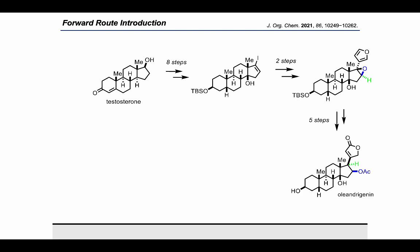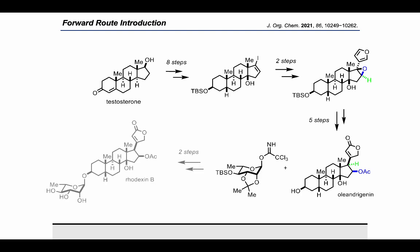Using this approach, we describe the development of a 15-step synthesis of oleandrogenin from testosterone and subsequent elaboration of oleandrogenin into the glycosylated natural product Radexin B. It is also noteworthy that during the preparation of this manuscript, Noe and co-workers applied a related rearrangement of an epoxide derived from the vinyl iodide steroid intermediate towards the synthesis of bufadenolides.